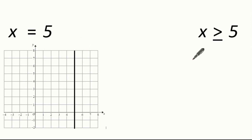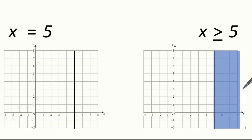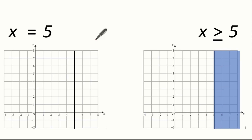Now let's have a look at the graphical representation of x is greater than or equal to 5. We know it does equal 5 because it's stated in the inequality, but we're also including x values greater than 5. We show this graphically using a solid line to say we include 5, and the shaded region identifies all the values of x which are greater than 5. A nice little hint when looking at x is to draw a vertical line.